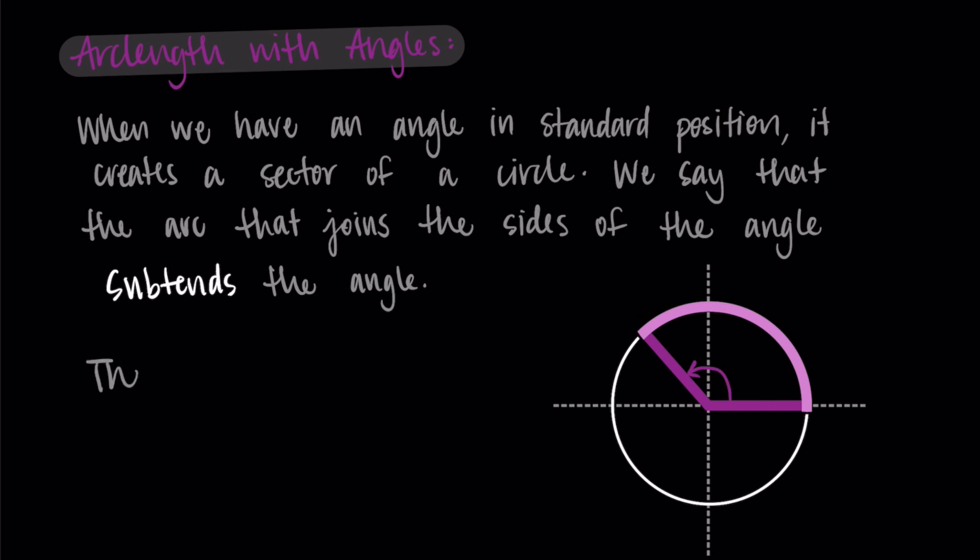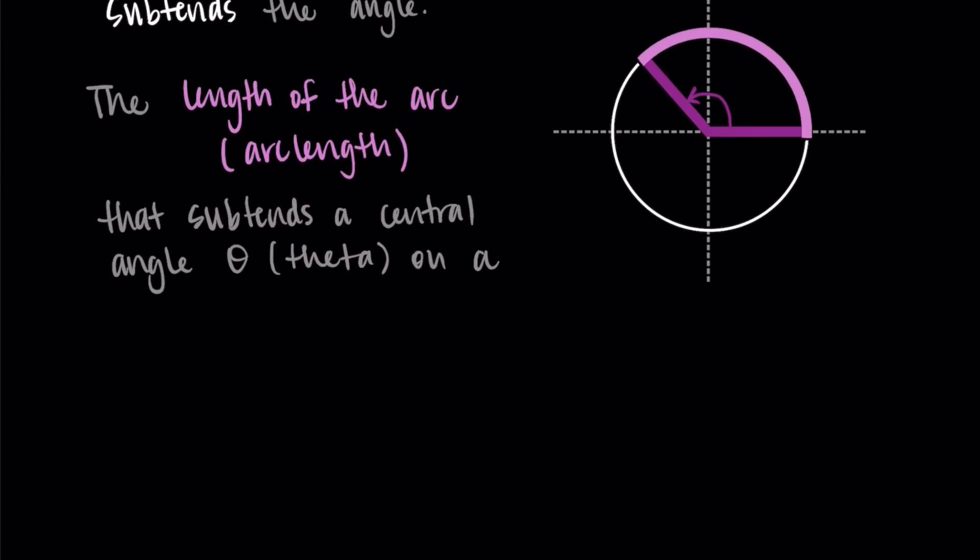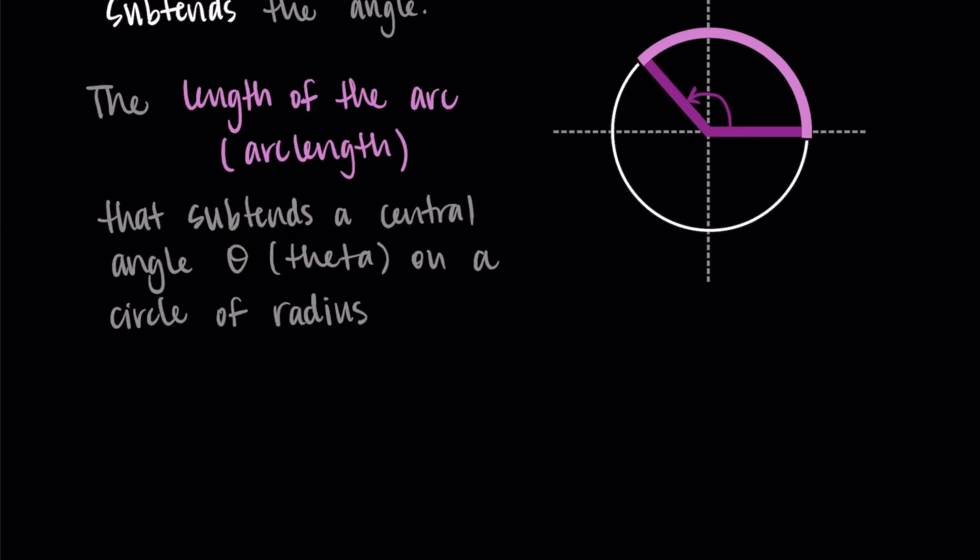Okay, so given this language, let's talk about the definition of arc length. So we would say the length of the arc, which is the arc length, that subtends a central angle theta, that's the symbol here, and a circle of radius r is given by the following. So I'm just defining our basic things here that are related to each other. So we have arc length, that's the arc spanned by this angle. The angle is theta, we're calling it a central angle because it's coming from the center of the circle, and it's on the circle with a radius of r.